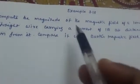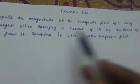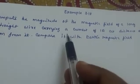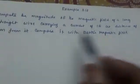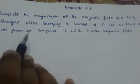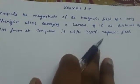Example 3.18: Compute the magnitude of the magnetic field of a long straight wire carrying a current of 1 ampere at a distance of 1 meter from it. Compare it with earth's magnetic field.